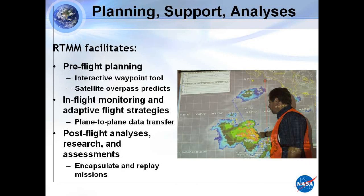Because of that integration, it's very useful in all three phases of a field experiment — from pre-flight planning of a mission, where you're deciding on flights. With NAMA, we developed an interactive waypoint tool, and you can coordinate that with predictive satellite overpass, putting the airplane at the right place when the satellite is overflying. During the flight, you're aware of where all your assets are, and we are even working on plane-to-plane data transfers.